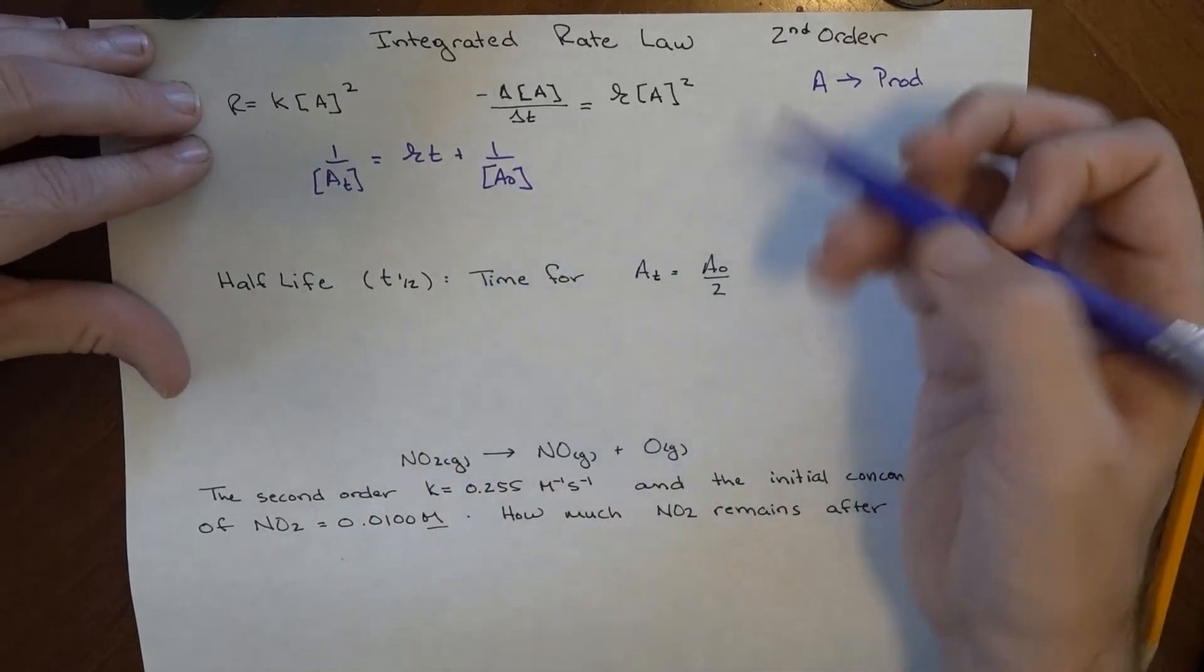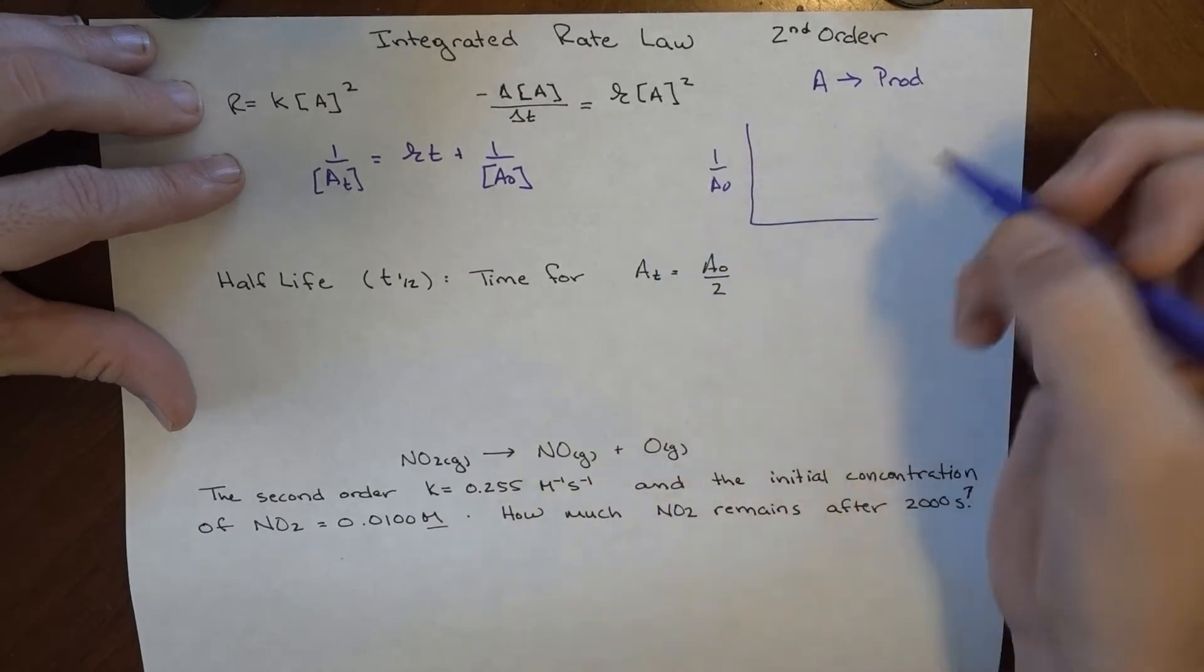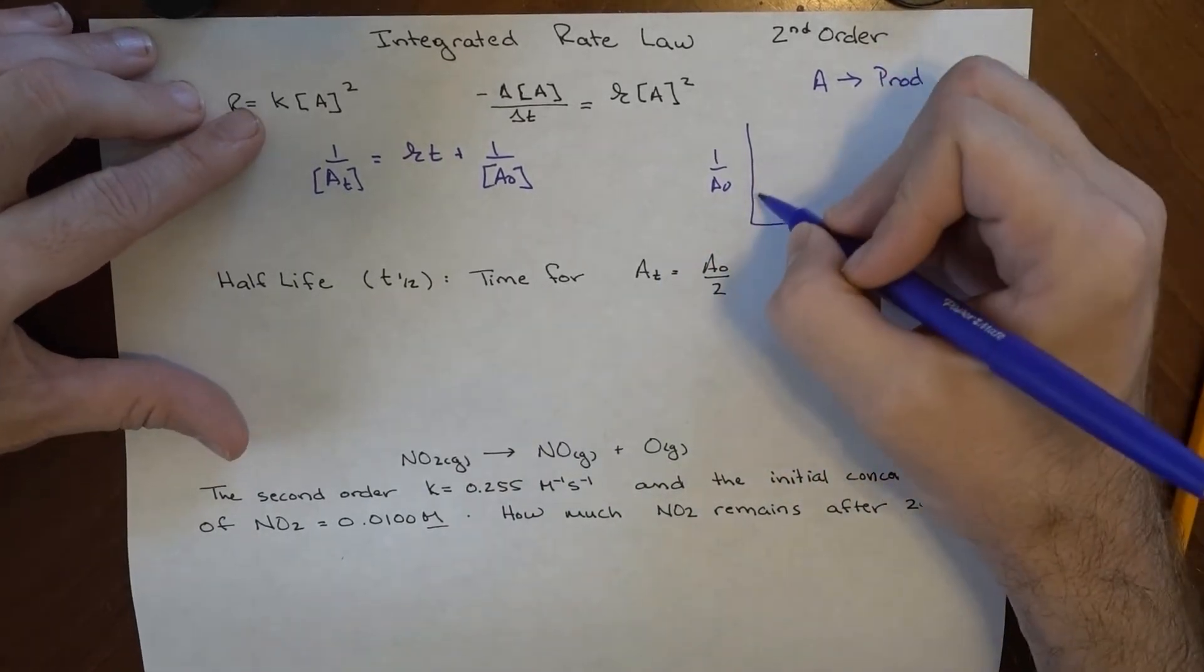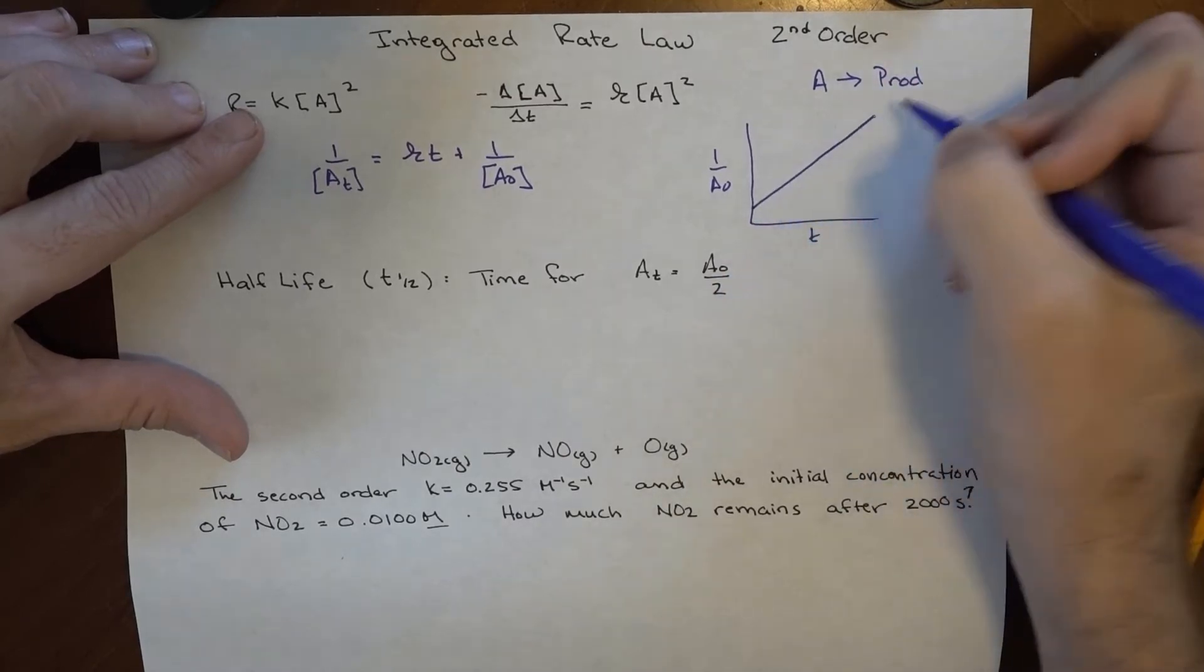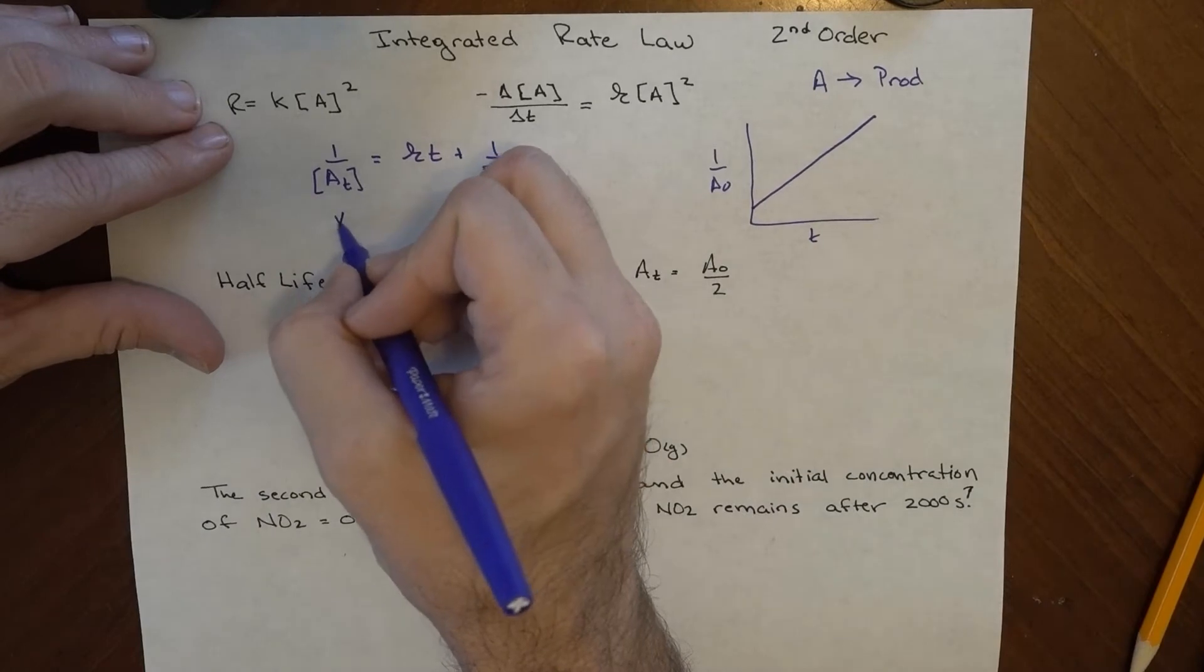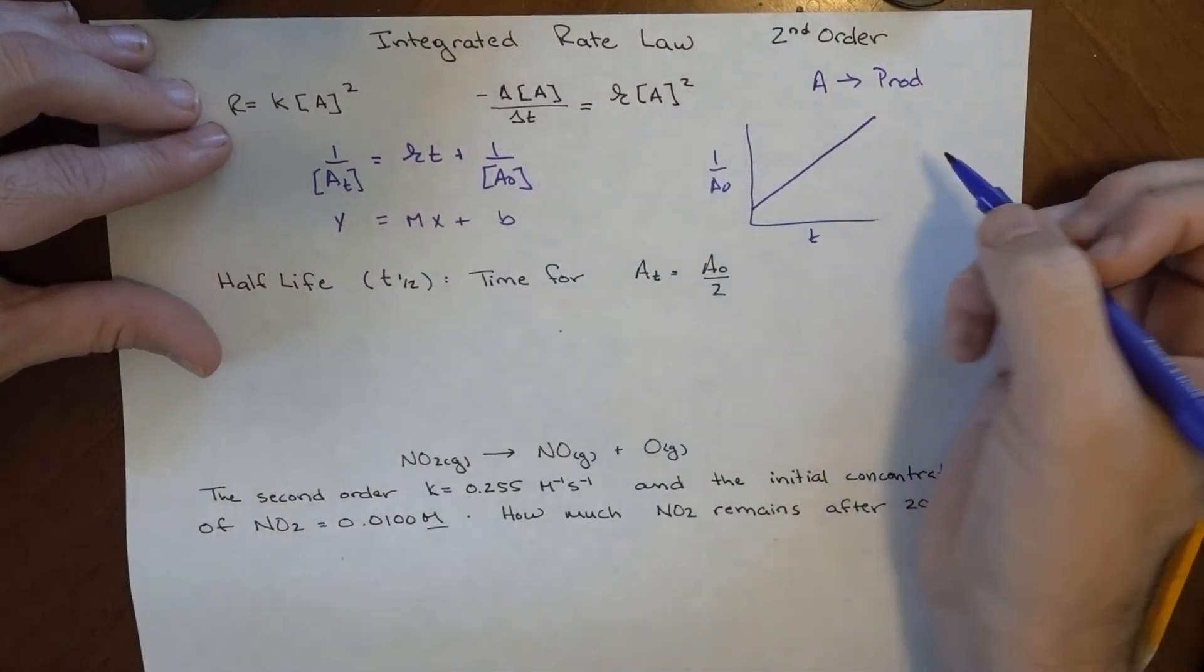If we were to plot that, 1/[A] being on one axis and time being on the other, we would get something that slopes upward like this, where the slope of that line would be equal to k, because this is our y = mx + b form of a line.